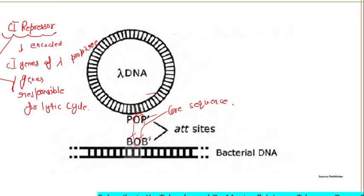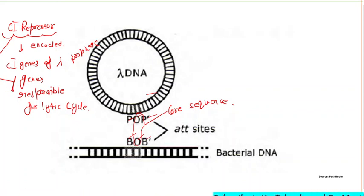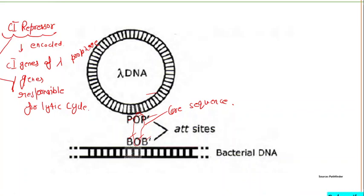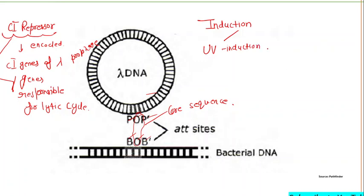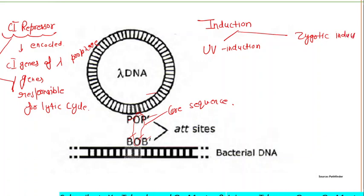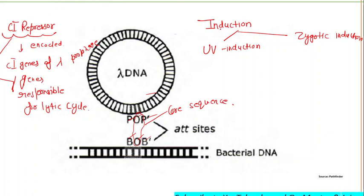If the prophage initiates synthesis of phage proteins, that will lead to destruction of the infected cell and new phages will be released — the lytic cycle will start. This process is known as induction. Induction can occur via UV induction or zygotic induction. In UV induction or zygotic induction, the CI repressor is no longer able to function, and the lytic cycle begins.